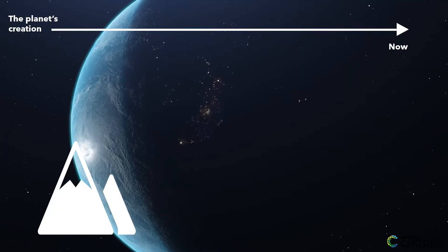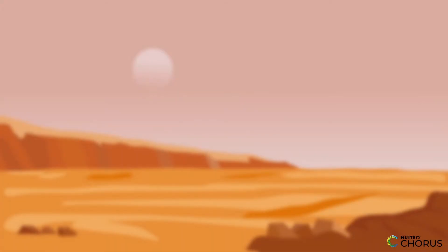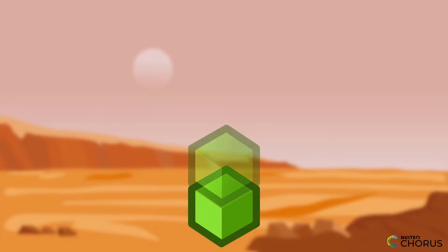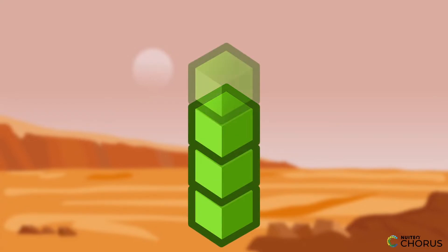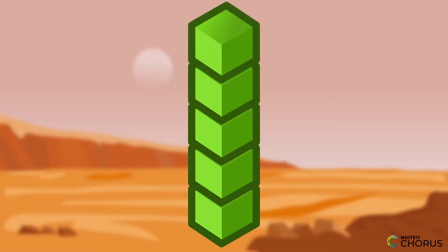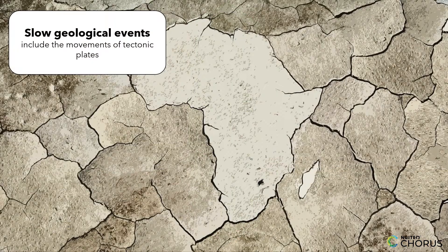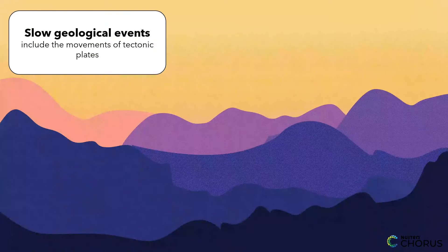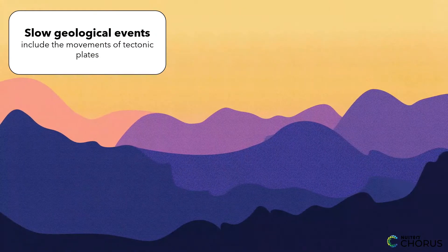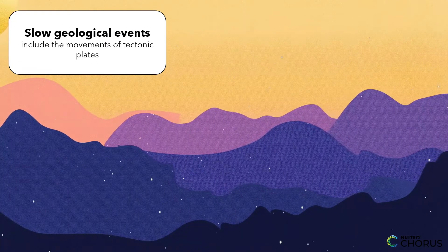For example, let's talk about how the Earth's surface changes at large scales. Imagine you're building a tower out of blocks. If you build the tower very slowly, block by block, it might take a long time to build a tall tower. This is similar to how the Earth's surface changes over millions of years, like the slow movements of tectonic plates that can uplift large mountain ranges.